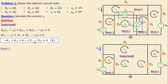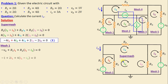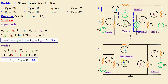Moving on to mesh one, applying Kirchhoff's Voltage Law we write: −Va + R1·i1 + R2(i1 − i2) = 0. Replacing the resistors and voltage with their numerical values, we obtain: −1 + 6i1 − 4i2 = 0.